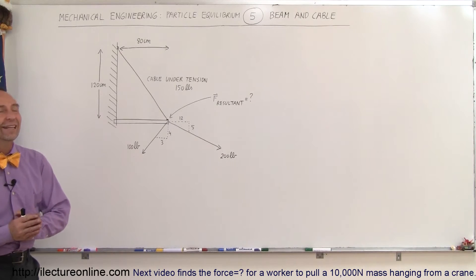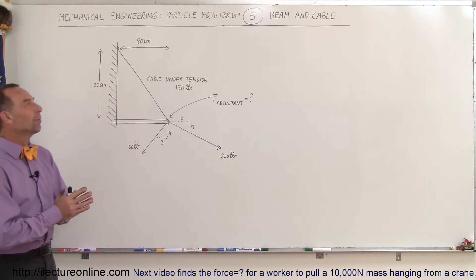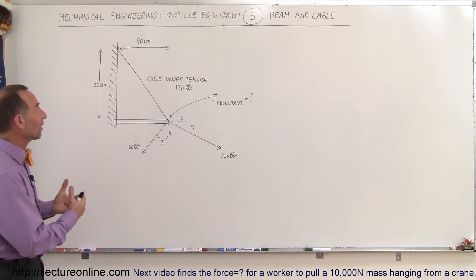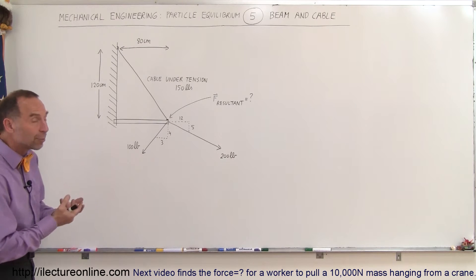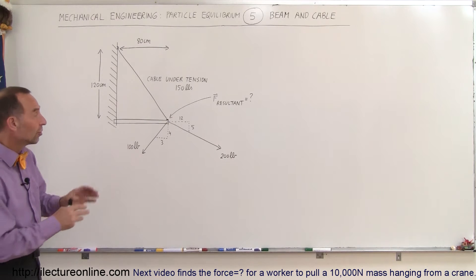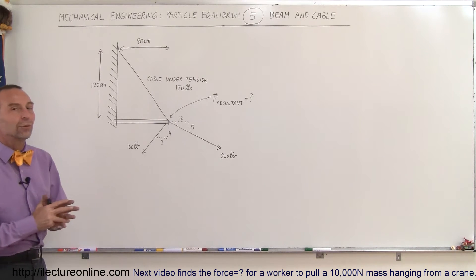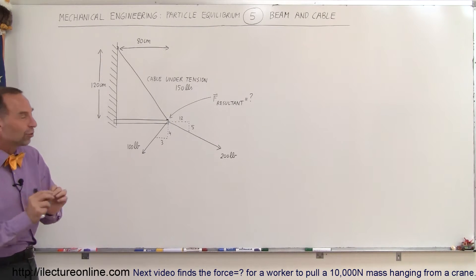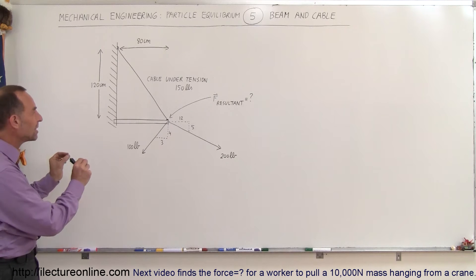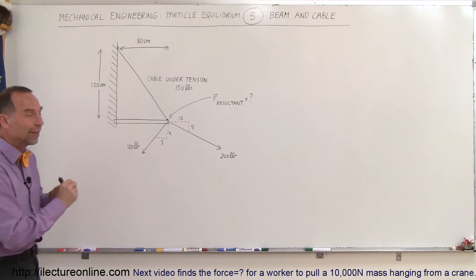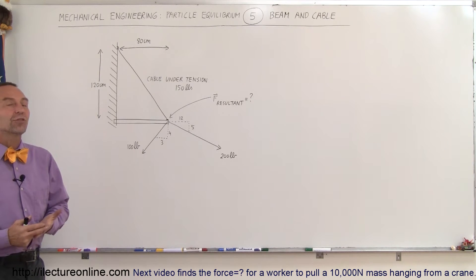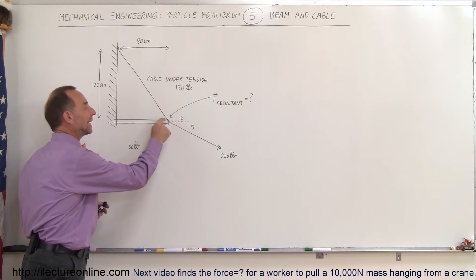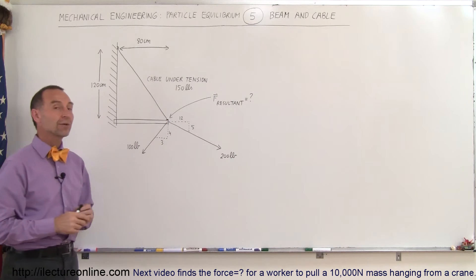Welcome to Electron Line. Here's our next problem where we're working with a system under equilibrium — nothing is moving, nothing is accelerating — which means the sum of the forces on any point in the system must add up to zero. The question is: what is the resultant force at the edge of the beam?